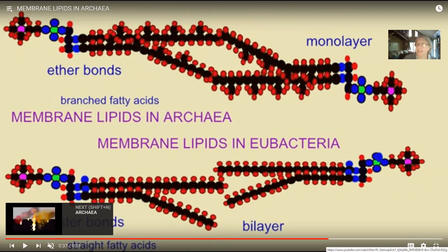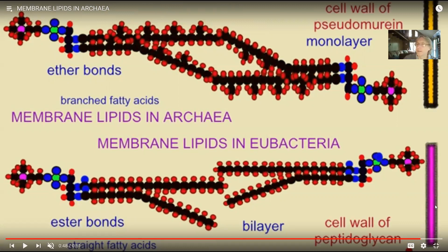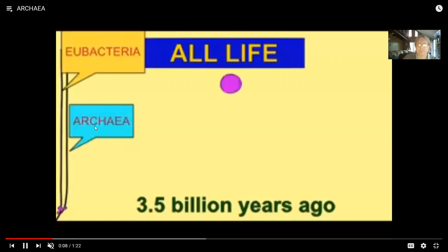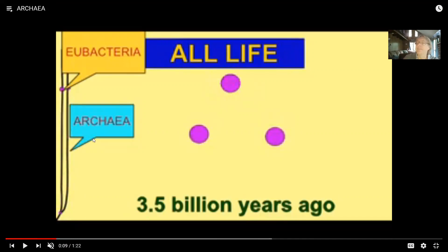The cell walls of eubacteria, when present, are made of peptidoglycan. But archaea have a different type of cell wall made of pseudomurein. Archaea are perhaps best known for being among the extremophiles. While many archaea are extremophiles, some eubacteria are also extremophiles, so this is not unique to archaea. But a very large percentage of archaea live in environments where you would think that life could not exist.